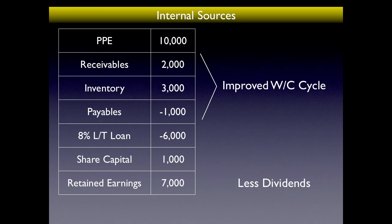Another internal source is to pay less dividends out of retained earnings — paying less dividend means more cash available to invest. Also worth noting: if there's an 8% long-term loan, return on capital employed (ROCE) is operating profit divided by total assets less current liabilities. If our ROCE is lower than 8%, we may as well pay off the loan, as that effectively gives us an 8% return. If we can't make 8% on a new project, it might be better to repay the loan.